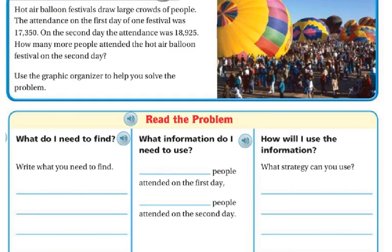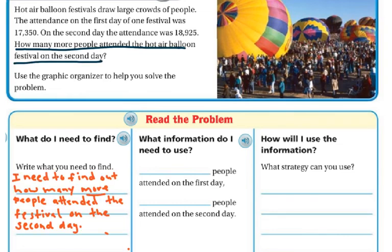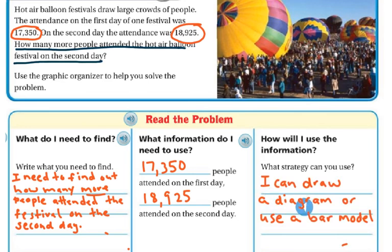So what do I need to find out? I need to find out how many more people attended the hot air balloon festival on the second day. And what information do I need to use? I need to know that the first day was 17,350 and the second day the attendance was 18,925. How am I going to use the information? I can draw a diagram or use a bar model.